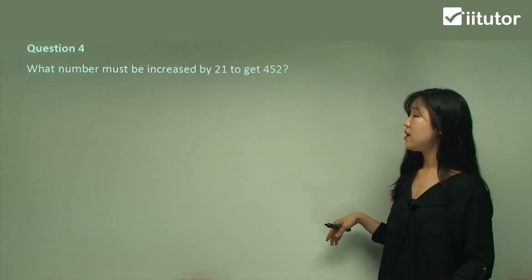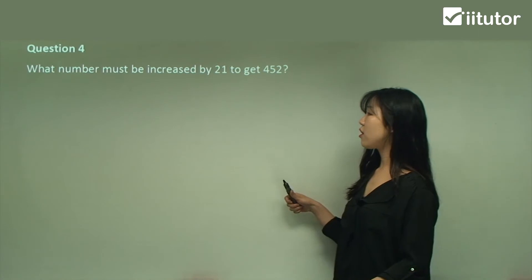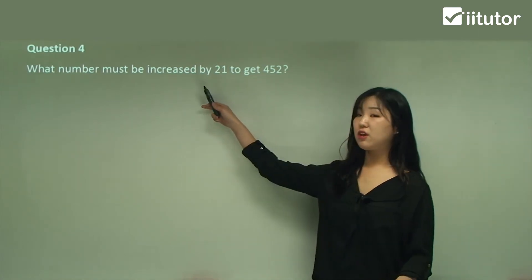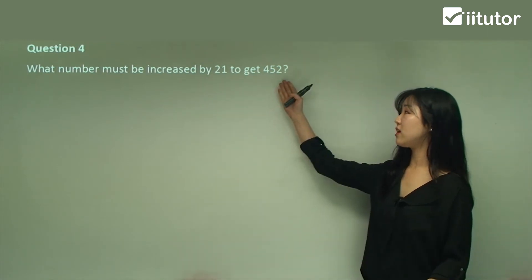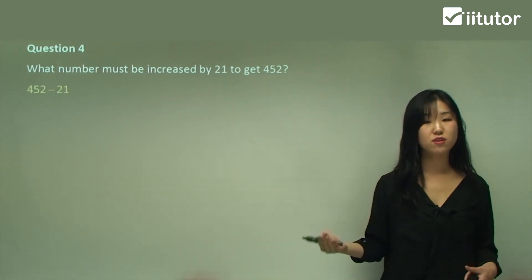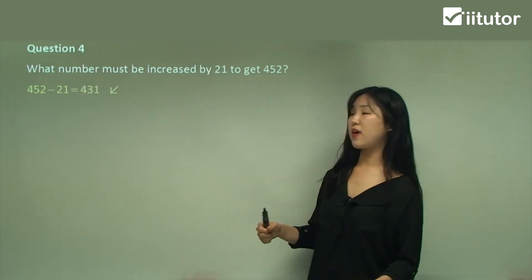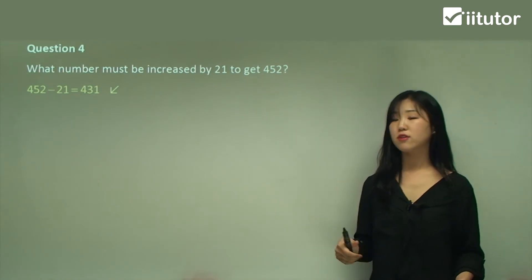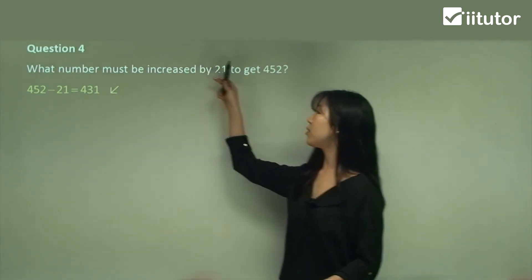Question four: what number must be increased by 21 to get 452? So what number do I have to increase by 21? What do I have to add to that in order to get 452? Well, we have to find the difference in order to get that, don't we? Subtraction. So that minus that number will get you 431. So we know that 21 plus 431 will give us 452.